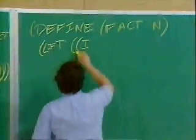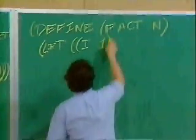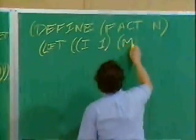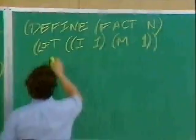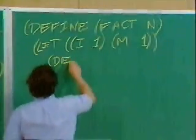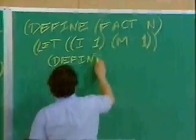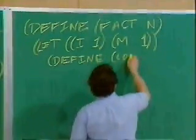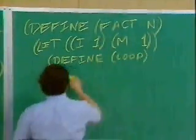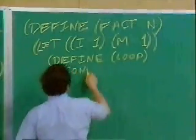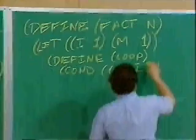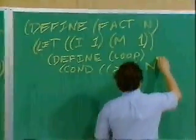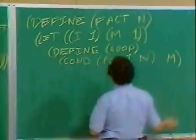Let i initialize itself to 1 and m be initialized to 1, similar. We'll create a loop, which has cond greater than i n. If i is greater than n, we're done, and the result is m, the product I'm accumulating.